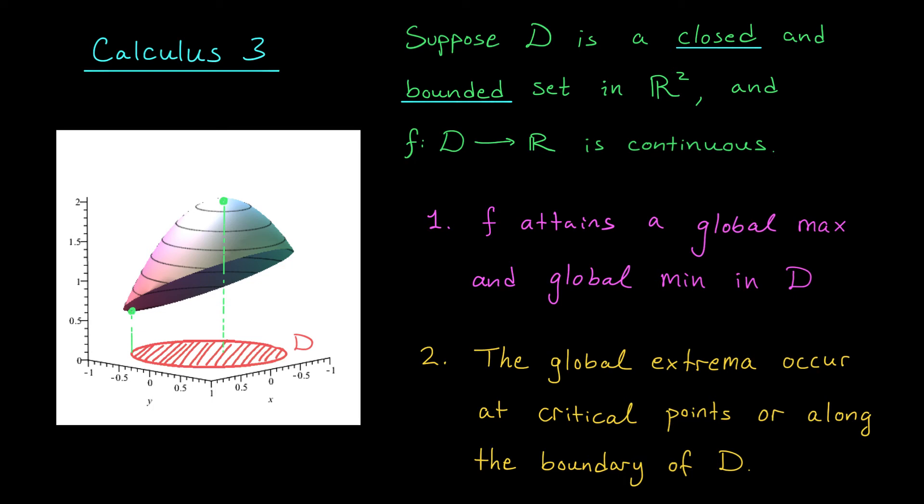Oh, this is great news! It means that maybe we can do the same sort of process as we had before. We can find the critical points of our function inside this region. We learned how to do that in our last lessons, right? And then compare the values of our function at these critical points to the values of our function at points along the boundary.